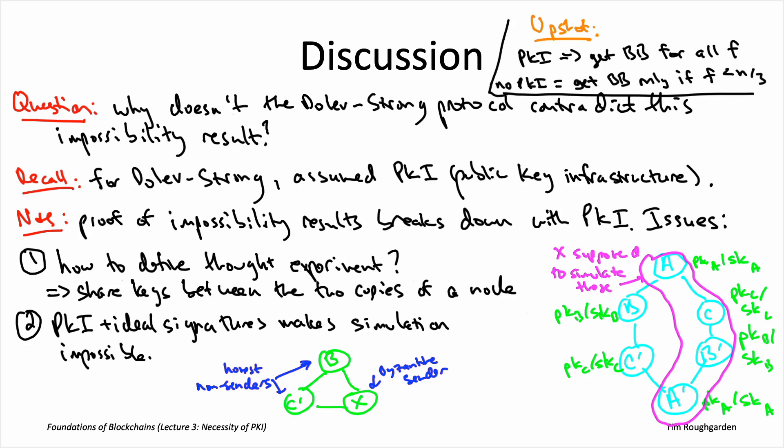So this separation, the fact that there are things you can do with PKI that you cannot without PKI, this is super, super interesting. In particular, this says that crypto really matters as far as when you can get good consensus protocols.